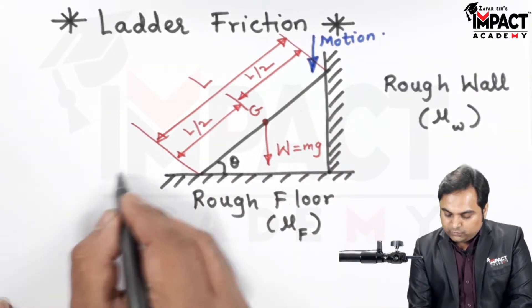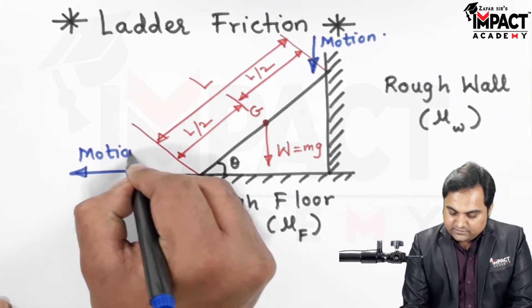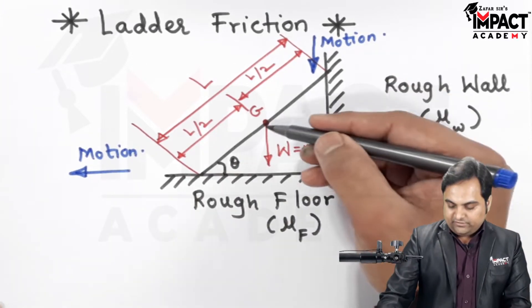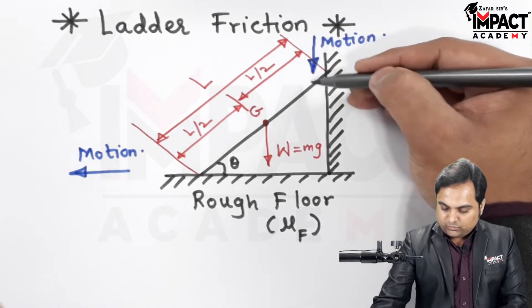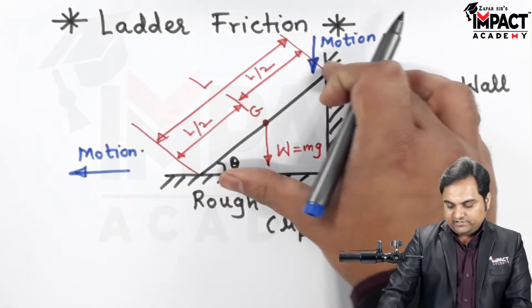And here also it would try to slide back. And this is an example that when the weight is acting, the motion is downward along the wall and on the floor it is towards left when it is sliding down.